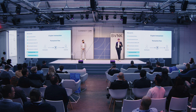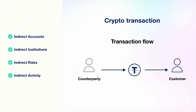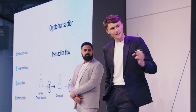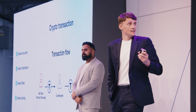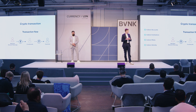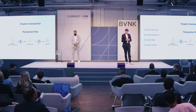But it doesn't stop at the direct exposure we have to these entities and their risk profile. We also have something called indirect exposure. Here, bad actors have been clustered and linked to terrorist financing by a blockchain analytics tool. We can see that those funds have gone into a counterparty, who has in turn sent those funds to us. This visibility — which you wouldn't have in the fiat space, where you'd only see the counterparty themselves — gives us a much richer intelligence and risk picture of the transactions we're processing.